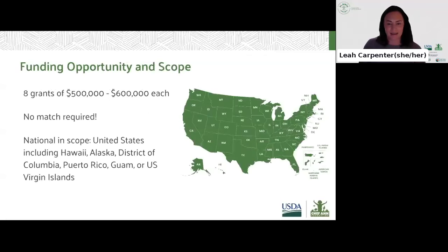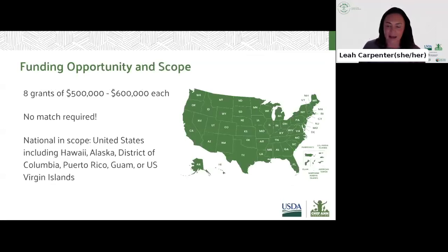Using a competitive process, we will award grants between $500,000 and $600,000 to eight local projects. This grant does not require grantees to match funding. The grant period will be three years and two months and kick off early next spring. The funding opportunity is national in scope. Applicants must be based in the contiguous United States, Hawaii, Alaska, District of Columbia, Puerto Rico, Guam, or the U.S. Virgin Islands.